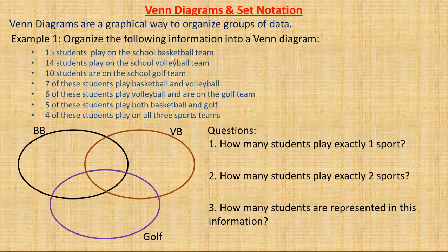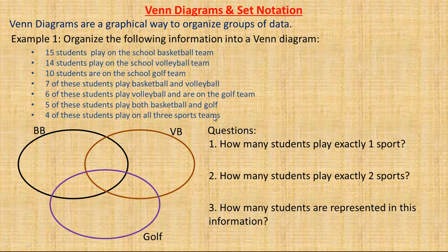In this first example, we're looking at students that play on the basketball, volleyball, and golf teams. The black oval is basketball, the brownish-orange one is volleyball, and this one is the golf team. You're told that 15 students play on the basketball team, 14 on the volleyball team, and so on. Then you get into the ones that play on two different teams: seven play on both basketball and volleyball, six on volleyball and golf, and four students play on all three sports teams.